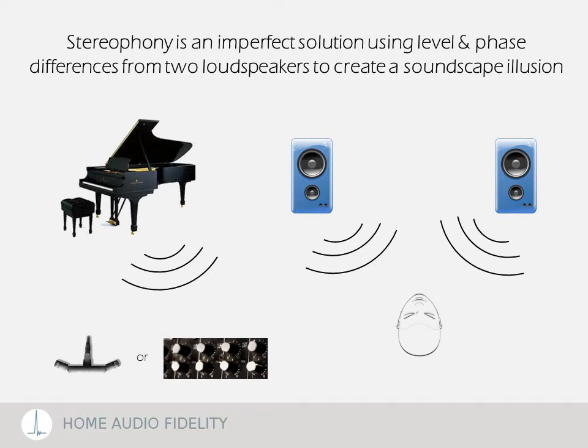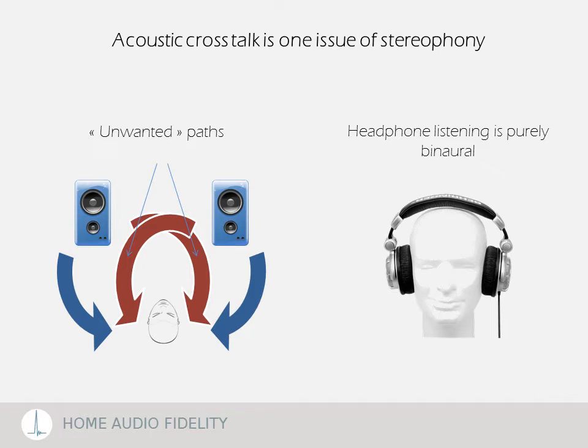Stereophony is a much more practical but imperfect system, using differences between two sources to create a soundscape illusion. The source signals can come either from a couple of microphones with specific spacing, or from a monaural source artificially converted into a pair of signals with level and phase differences. Stereo reproduction with headphones prevents any cross-feeding between the channels and it doesn't sound natural. On the other end, reproduction with loudspeakers is far from the ideal binaural reproduction chain. As visible in the illustration, it has permanent cross-feeding between the left and right channels — this is what we call acoustic crosstalk.